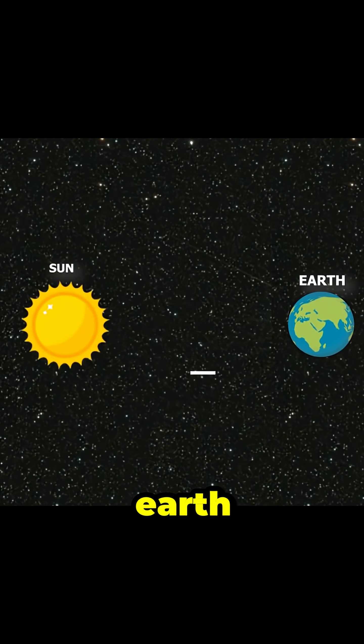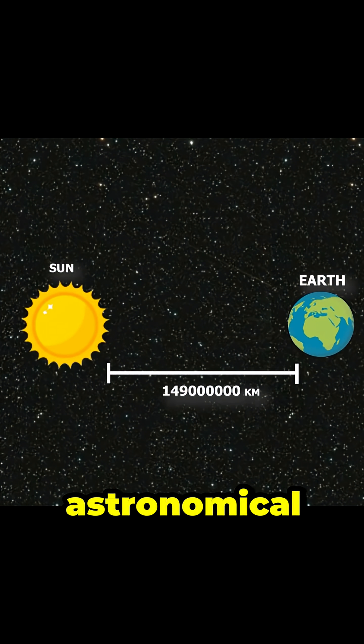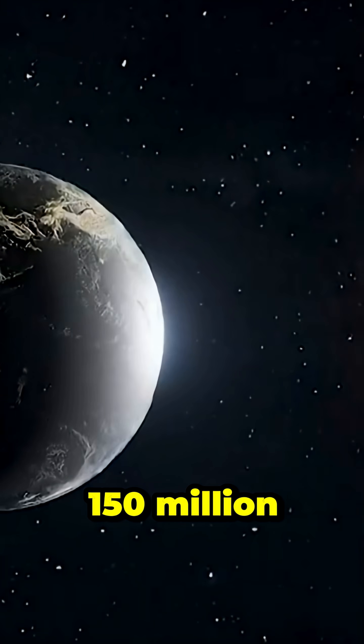Imagine the distance from Earth to the Sun. It's called one astronomical unit, about 150 million kilometers.